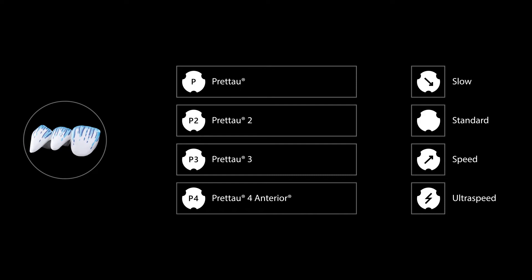To ensure high-quality results and avoid discrepancies in translucency, color gradient, or flexural strength, it is necessary to select the sintering program that corresponds both to the material and structure type.